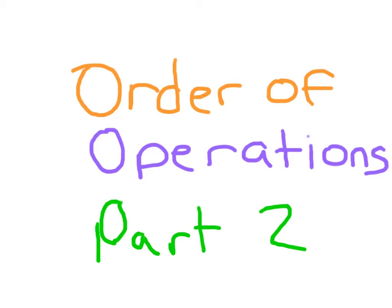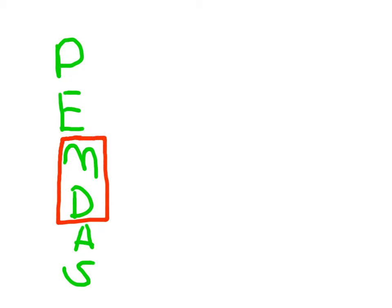Order of Operations, Part 2. Alright, so we have our order of operations and we have PEMDAS, standing for Please Excuse My Dear Aunt Sally. Remember, multiplication and division occur from left to right, and addition and subtraction occur from left to right.